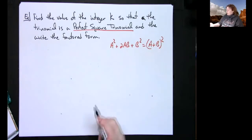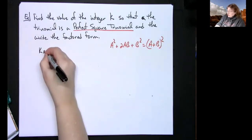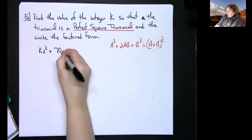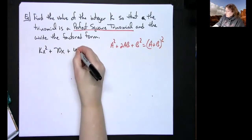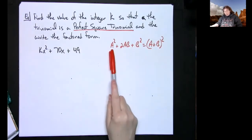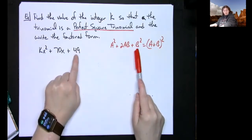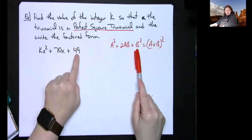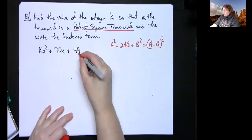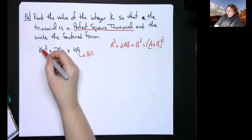We'll go into more detail on that formula Wednesday. For now, let's say they give you k times x squared plus 70x plus 49. What we know about perfect square trinomials is that the first and last terms have to be perfect squares. They've told me this last number is b squared — 49 is a perfect square — so b equals 7, because 7 times 7 is 49.